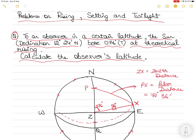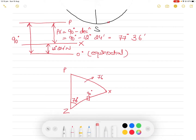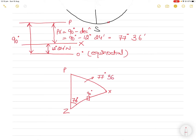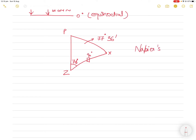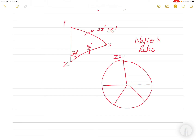Now we have two known quantities in the triangle. Any spherical triangle with a side of 90 degrees is called a quadrantal triangle. So we have triangle PZX, where ZX is 90 degrees, angle Z is 76 degrees, and side PX is 77 degrees 36 minutes. To solve this we use Napier's Rules. We draw a circle, cut it into two semicircles — the top has two halves, the bottom has three parts — and place the 90-degree side ZX outside.